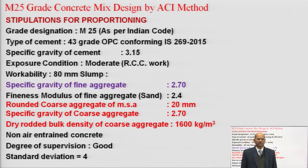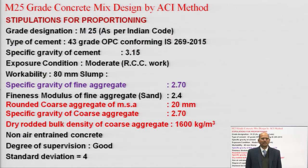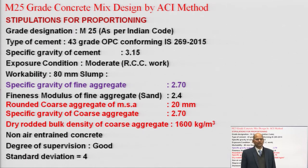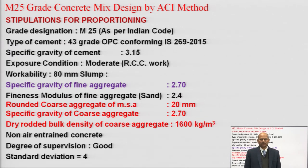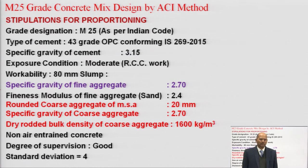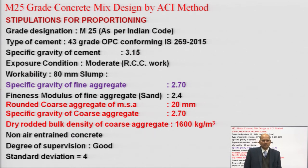For workability, there is a table in ACI for different types of work. You can also use the IS 456 table. Then you have to find the specific gravity of fine aggregate and coarse aggregate, fineness modulus of fine aggregate — you have to do the experiment. Also note whether aggregate is rounded or angular, and find the specific gravity of coarse aggregate. The dry rodded bulk density of coarse aggregate is required; in this case I have taken 1600 kg/m³.